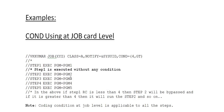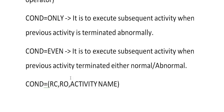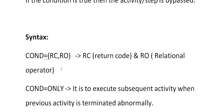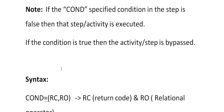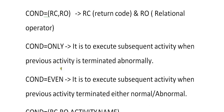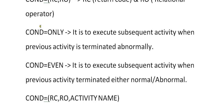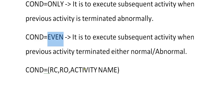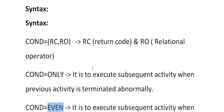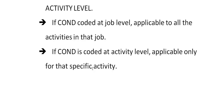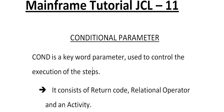These are the multiple scenarios you might encounter while working with JCL using COND parameters. This is very very important. Try to practice it with five to ten steps and make use of these different COND parameters. Also try using ONLY and EVEN, and experiment with specifying activity names. Try giving the return code of step five with the step name and try it differently.